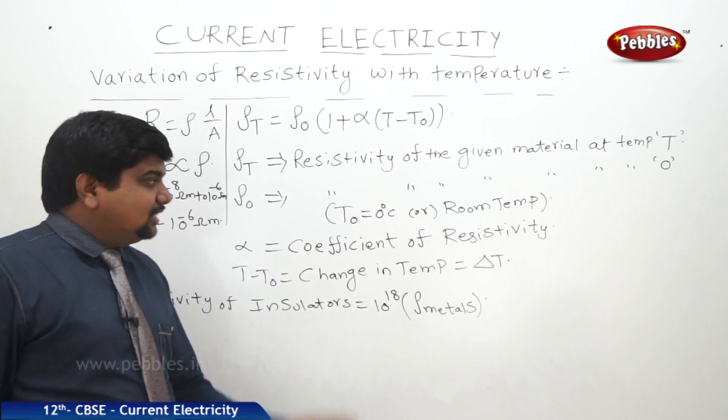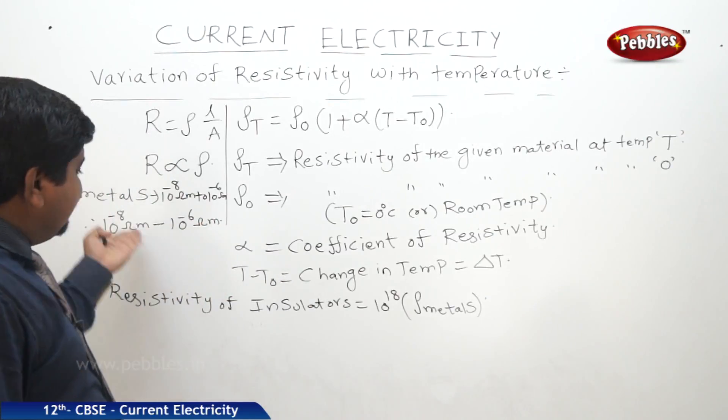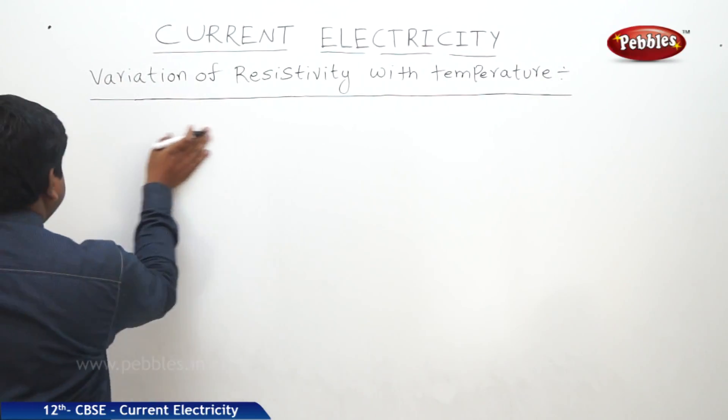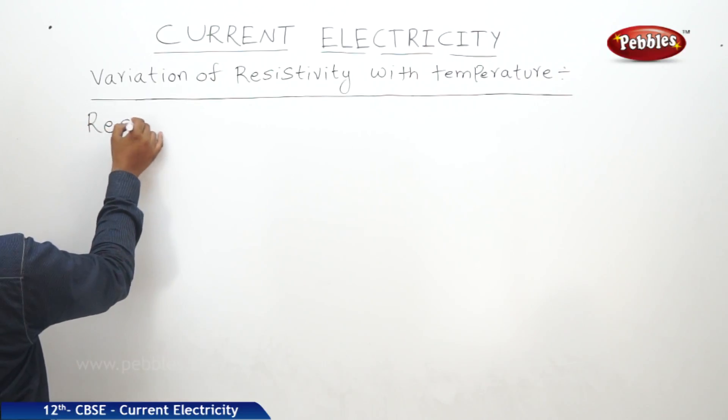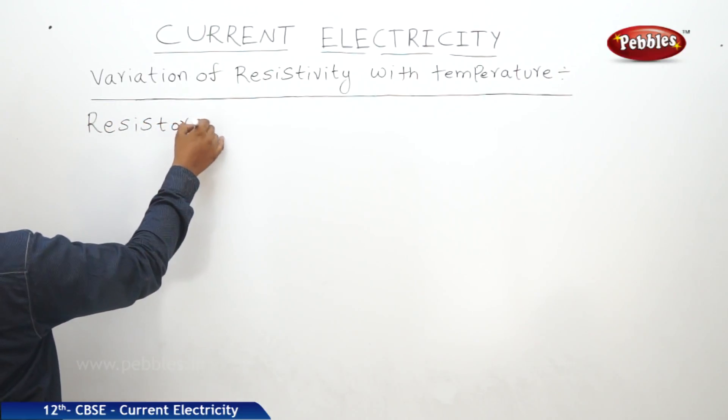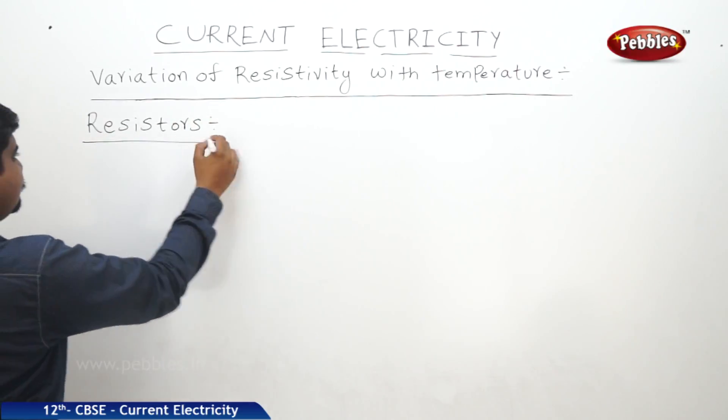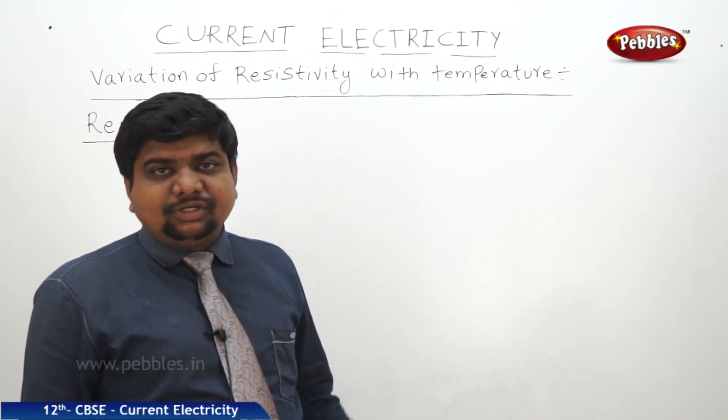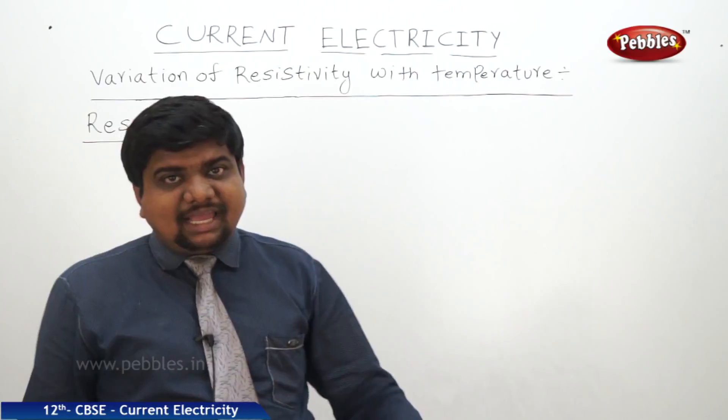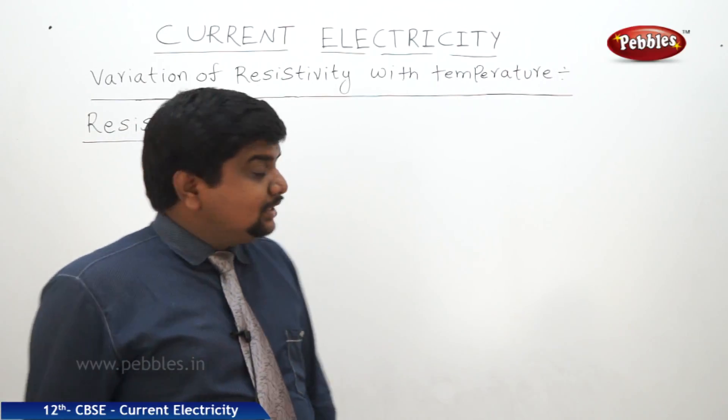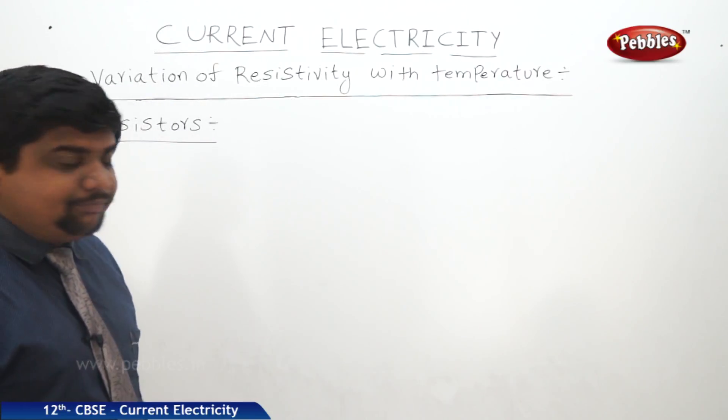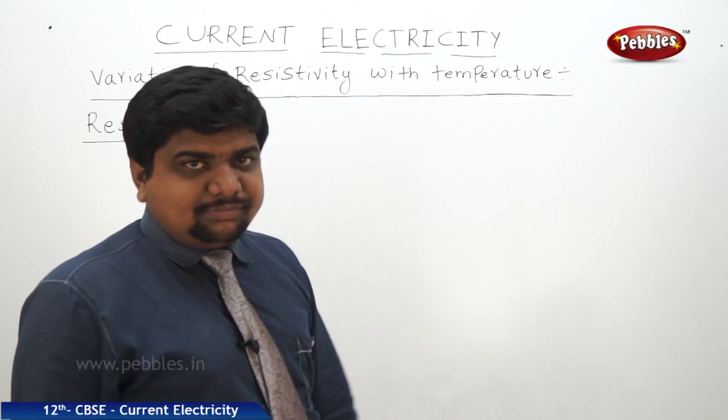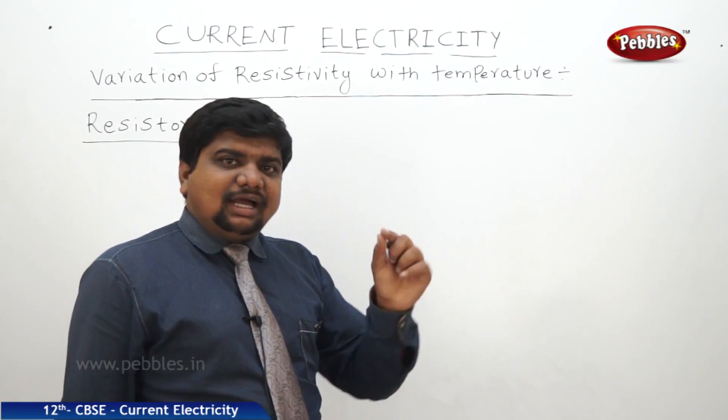The next concept is resistors, which are useful in electrical circuits. For students doing research and experiments in the physics lab, resistor construction is important. The commercially used resistors are two types: wire bound resistors and carbon resistors.